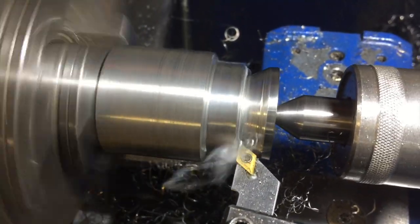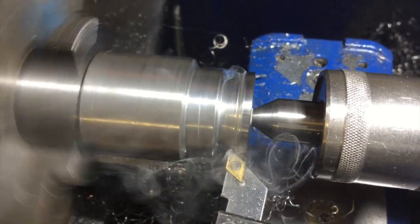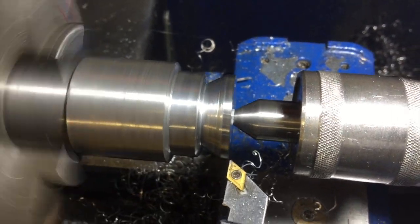Before parting off, a hole is drilled through the center of the spigot and tapped for a 10 millimeter bolt, and then it's parted off.